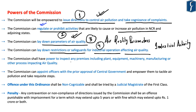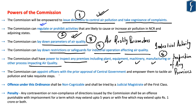Fifth, the commission shall have the power to inspect any premises including any plant, equipment, machinery, manufacturing or any other process which impacts air quality. Sixth, the commission can appoint officers with the prior approval of the central government and empower these officers to tackle air pollution and take requisite steps.